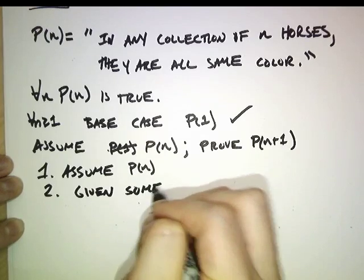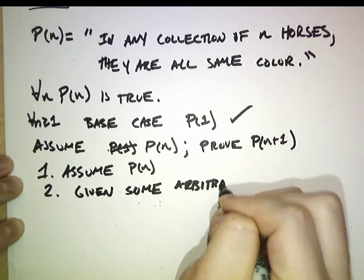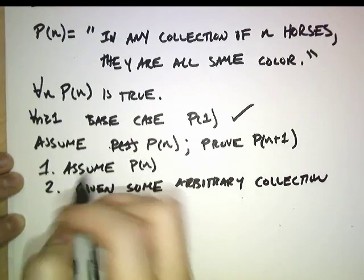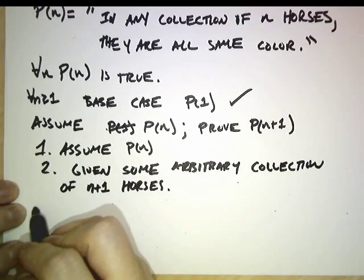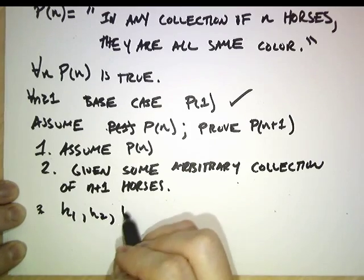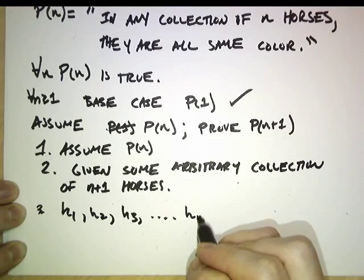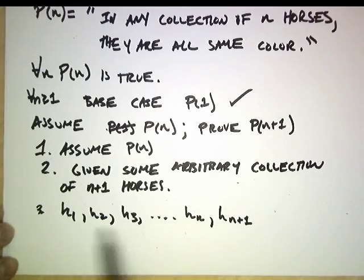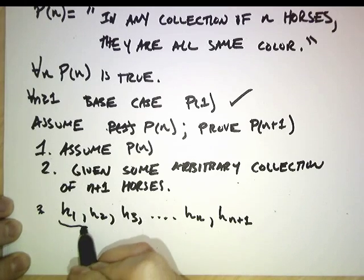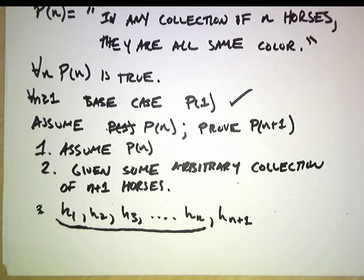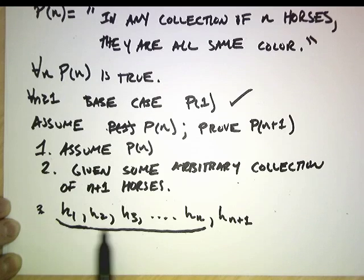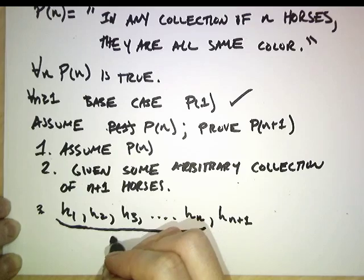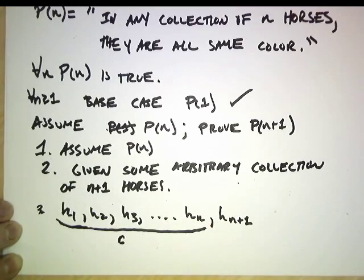So let's assume we're given some arbitrary collection of n+1 horses. I'm going to write them out here: h1, h2, h3, ... hn, hn+1. These are all the horses, all n+1 of them. Now let's look at these first n horses. Since we assume P(n) is true, P(n) says that in any collection of n horses they're all the same color. So by our inductive hypothesis, h1 through hn all have to be the same color — I'll call that color c.